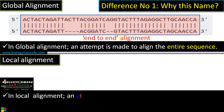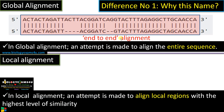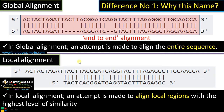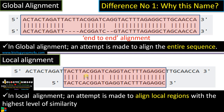Whereas in the case of local alignment, an attempt is made to align local regions with the highest level of similarity. We are aligning only stretches or certain regions of the sequence that have the highest similarity, without considering the rest of the sequence. That is why it is called local alignment — local regions of high similarity are selected.